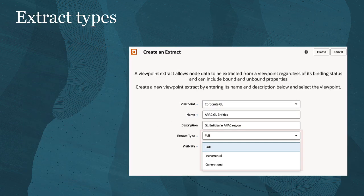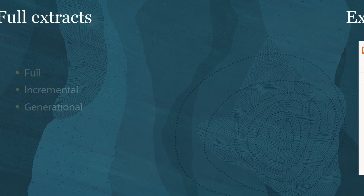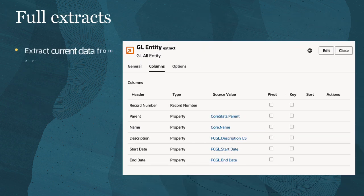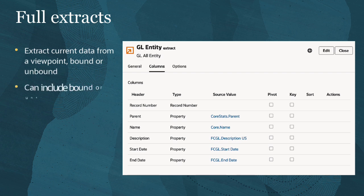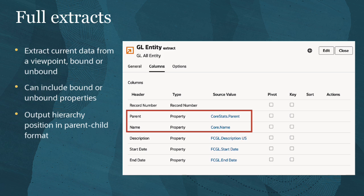There are three types of extracts: full extracts, incremental extracts, and generational extracts. Full extracts extract all current data from a viewpoint, bound or unbound. The extract can include bound or unbound properties. For hierarchy viewpoints, you can extract nodes and their hierarchical relationships by including both the core name property and the core stats parent property in your extract.